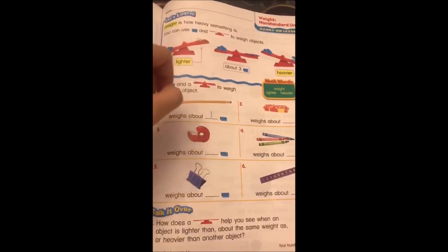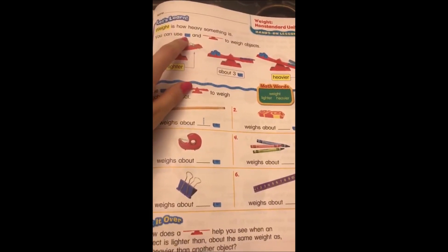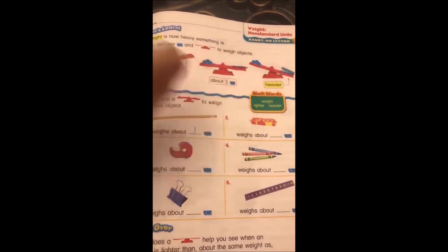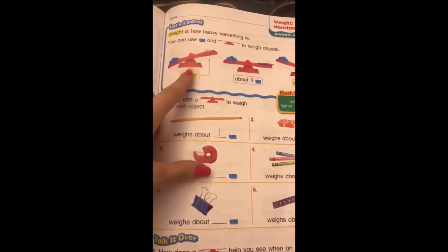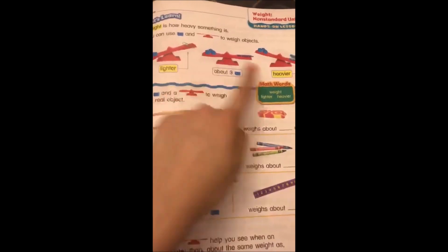So here they said you can use like a cube if you see it and a balance to weigh objects. We're going to weigh objects. So basically they gave us here those examples and we're going to work those exercises in here and the next page based on those.